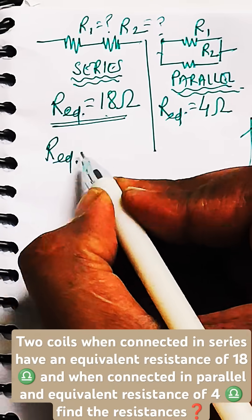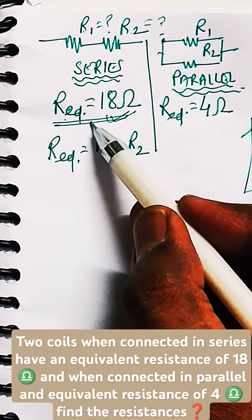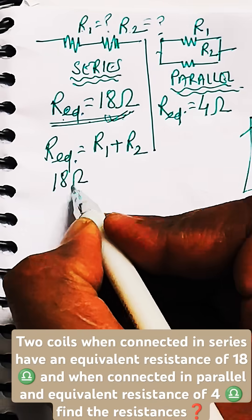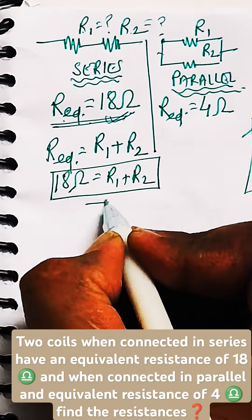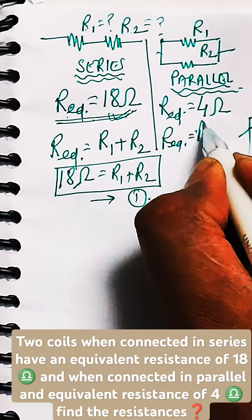Now we use the formula when connected in series. The two resistances value is simply addition. That is R equivalent is equal to R1 plus R2. We just put this value of 18 ohm which is given in the question, and this will be our equation number 1.